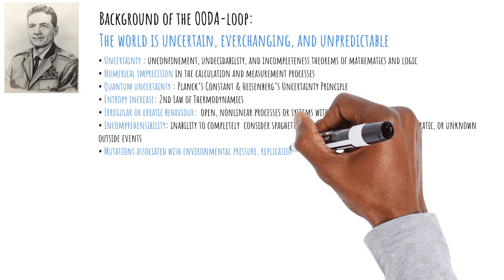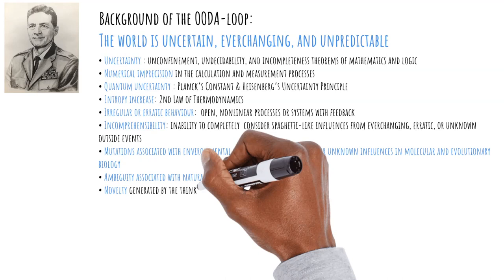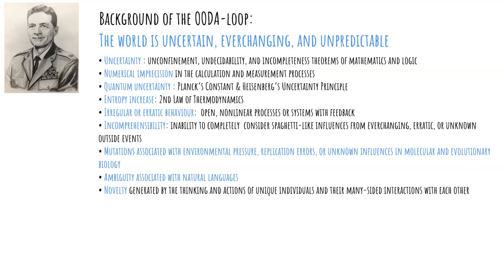We also get inaccuracies in our observations due to numerical imprecision in the calculation and measurement processes. The quantum uncertainty gives us a more fundamental uncertainty — it basically implies that measurement itself influences the system. Link this to the second law of thermodynamics and we have a situation where we cannot measure precisely, we cannot calculate precisely, the basis of our calculations are incomplete, and entropy or chaos steadily increases. As Boyd puts it himself, and I quote: One cannot determine the character or nature of a system within itself.